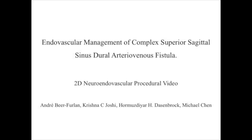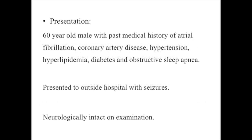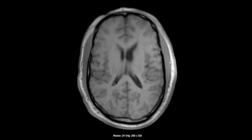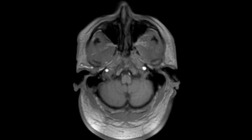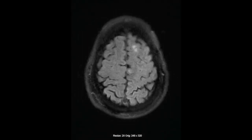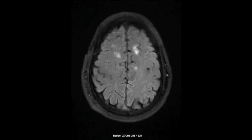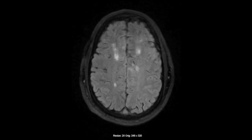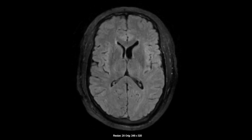This is a case of a complex superior sagittal sinus fistula that presented both a diagnostic challenge as well as an unusual treatment approach. The patient was a 60-year-old man with multiple medical problems who presented with his first seizure. His subsequent neurological exam was normal. Imaging investigation with MRI was remarkable for bilateral paramedian frontal, centrum semiovale, corona radiata increased signal on T2 and FLAIR sequences.